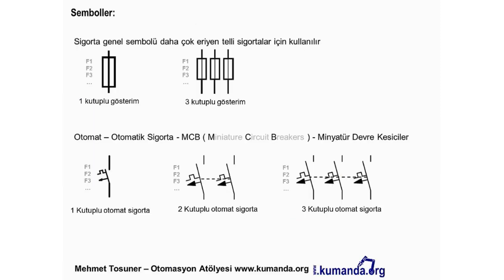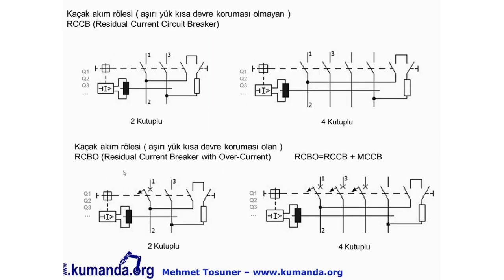Sembollere göz atalım: genel sigorta sembolü eriyen telli sigortalar için kullanılır. MCB için 1, 2 ve 3 kutuplu semboller var; ok manyetik açıcıyı (kısa devrelerde), kare ise termik açıcıyı (aşırı yüklerde) gösterir. RCCB sembolünde toroid sistemi sembolize edilir, termik-manyetik koruma yoktur. RCBO sembolünde çarpı yük ayırcısını, ok ise kısa devre korumasını gösterir. IEC standartlarındaki sembollerle ilgili ayrı bir video hazırlamayı düşünüyorum.